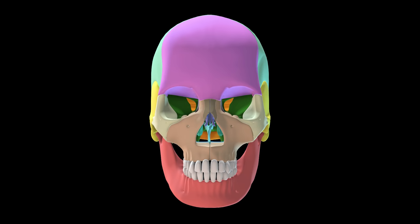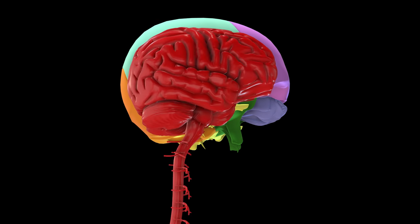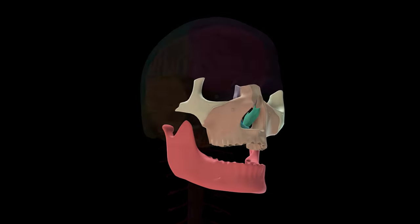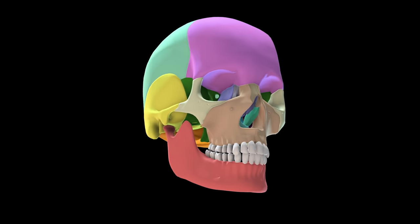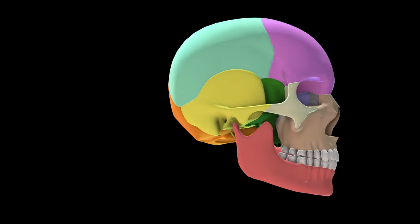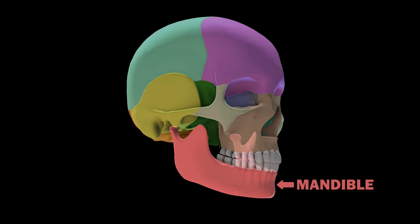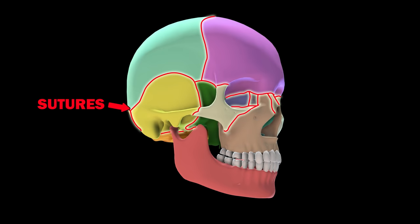The skull is made up of 22 different bones: 8 cranial bones that enclose your brain within the neurocranium, and 14 facial skeleton bones. There are also 6 ear bones. With the exception of the mandible, the bones of the skull are joined by sutures, which are a kind of joint that is synarthrodial — in other words, it can't move.